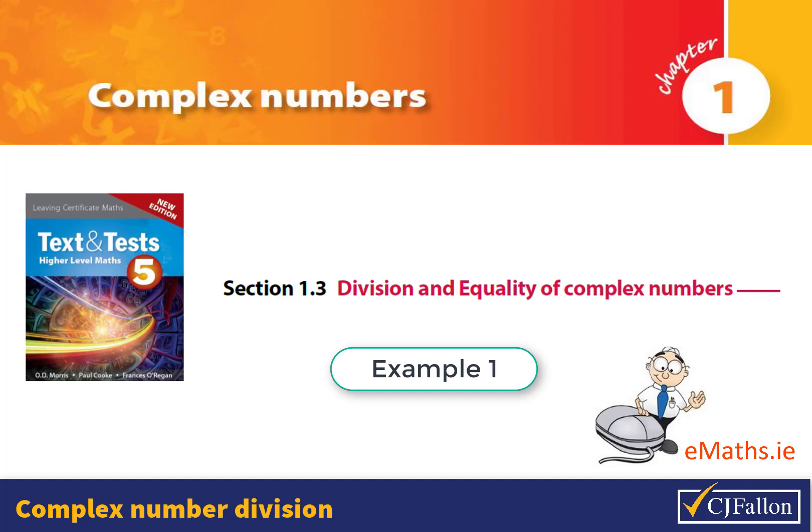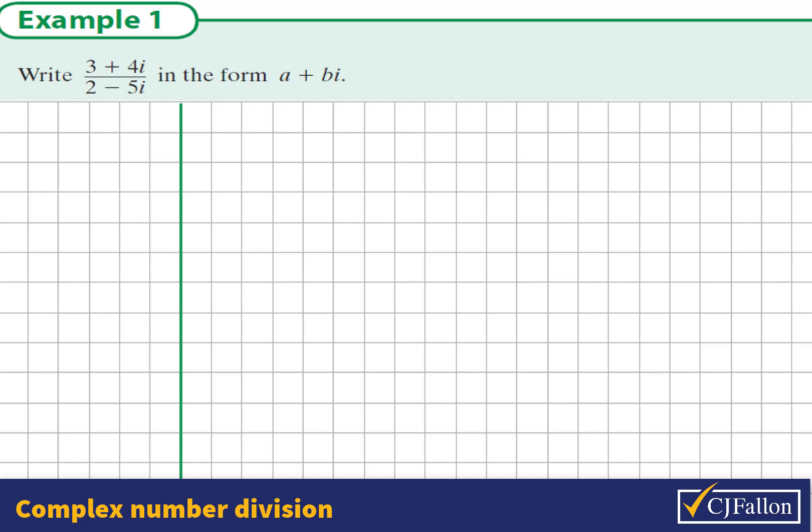Complex number division example 1. Write 3 plus 4i divided by 2 minus 5i in the form a plus bi.